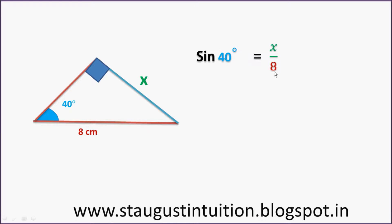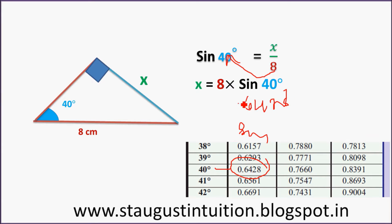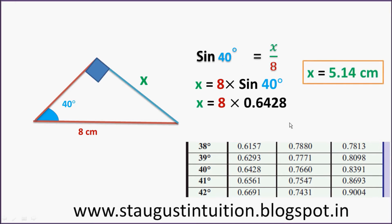Sin 40 degrees equals x divided by 8. Then x is equal to 8 into sin 40 degrees, which equals 0.648. So x is equal to 5.14 cm. This is our answer.